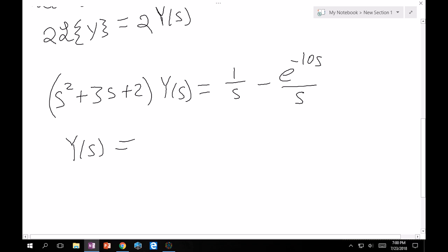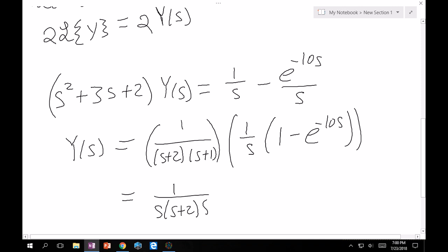So then Y(s) equals 1 over this. Now this factored is (s+2)(s+1). Let's go ahead and put that in. It's times all of this. You can take out another 1/s here, and this becomes 1 - e^(-10s). So really, it's 1 over s(s+2)(s+1) times the quantity (1 - e^(-10s)). And we have to take the inverse Laplace of that.